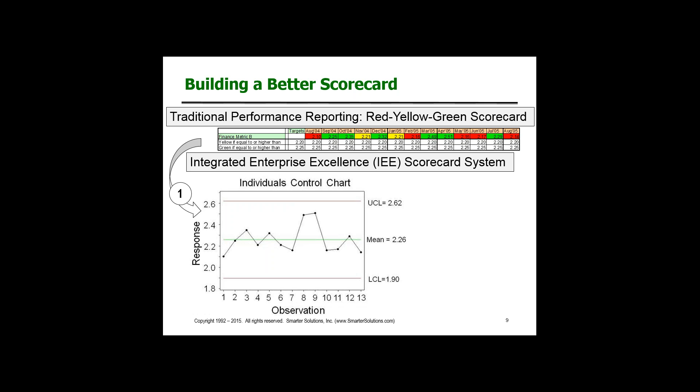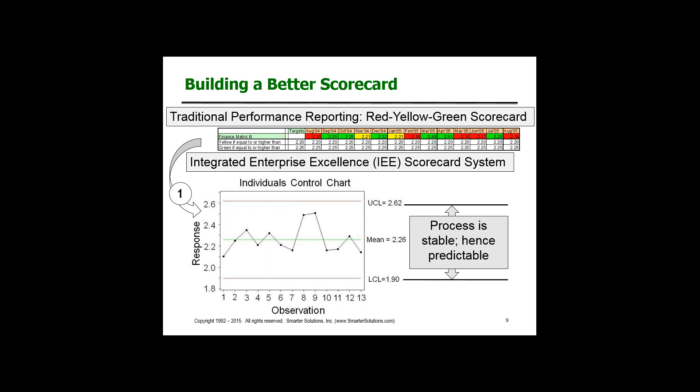Now if you've got a process that's stable like this — which indicates there have been no improvements to the process — then we can say our process is stable, hence it is predictable. So I can start looking out the windshield of the car instead of driving while looking at the rear view mirror, which can be rather hazardous. Looking out the windshield, if I don't like what I see, I have to apply my brakes or turn the steering wheel — not unlike a process improvement project.